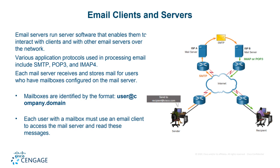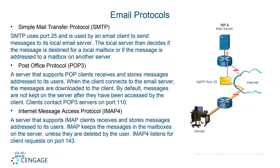Email clients and servers: email servers run server software that enables them to interact with clients and with other email servers. We have various applications for email such as SMTP, POP3, and IMAP4. Mailboxes for users use the @ symbol to identify — for example, user@company.domain.com. SMTP uses port 25 and is used as an email client to send messages to the local email server. The local server then decides if the message is destined for a local mailbox or addressed to a mailbox on another server.